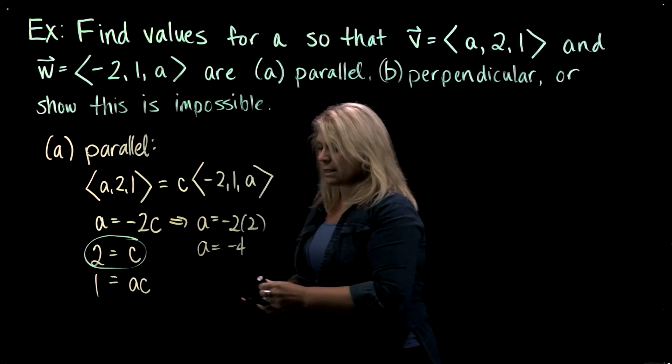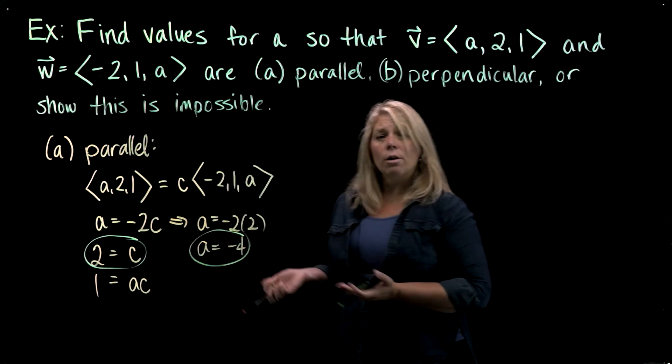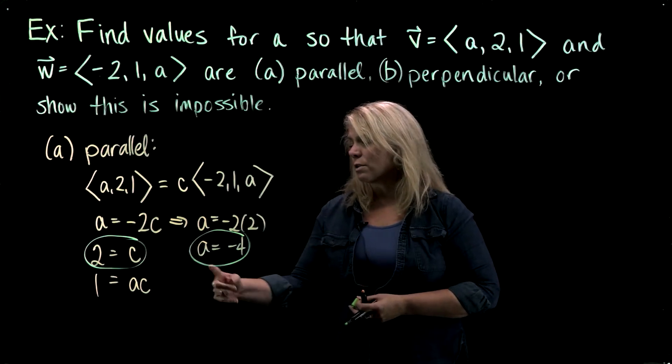So the second equation gave me C equals 2. The first equation then gave me A equals negative 4. In order for this system to be true, I would have to check that those two values also work in the third equation.